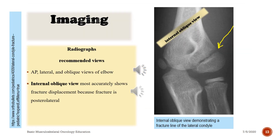Radiographs — Recommended views: AP, lateral, and oblique views of the elbow. The internal oblique view most accurately shows fracture displacement because the fracture is posterolateral. Look at the radiograph: internal oblique view demonstrating a fracture line of the lateral condyle — notice the arrow.